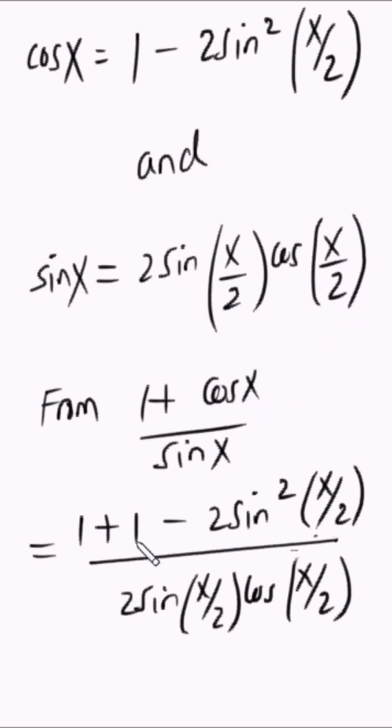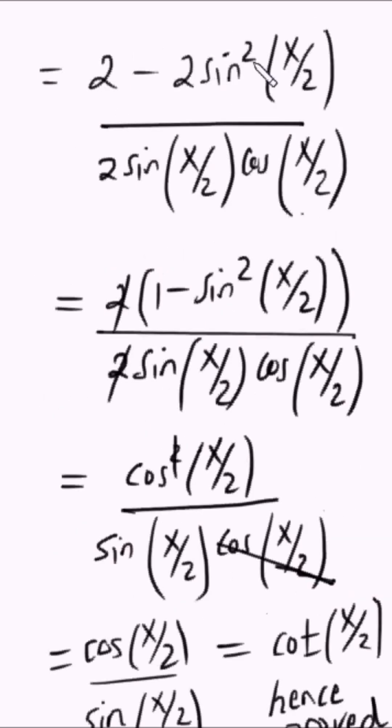So in place of cosx, we put 1 minus 2 sin squared of x over 2. And in place of sinx, we put 2 sin of x over 2 times cos of x over 2. 1 plus 1 here is 2, so it becomes 2 minus 2 sin squared of x over 2 over this.